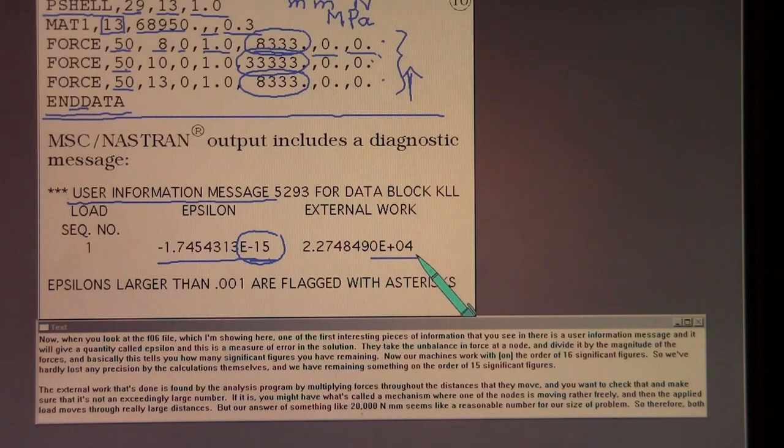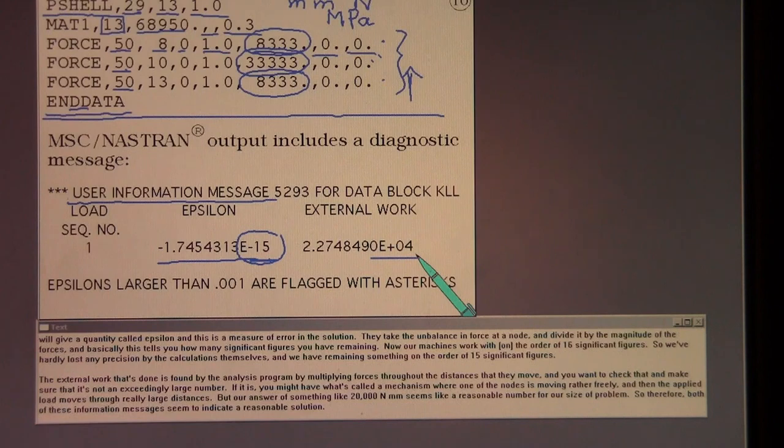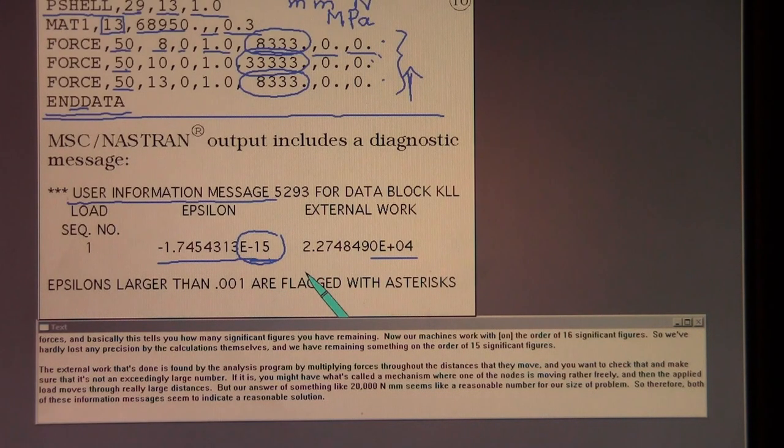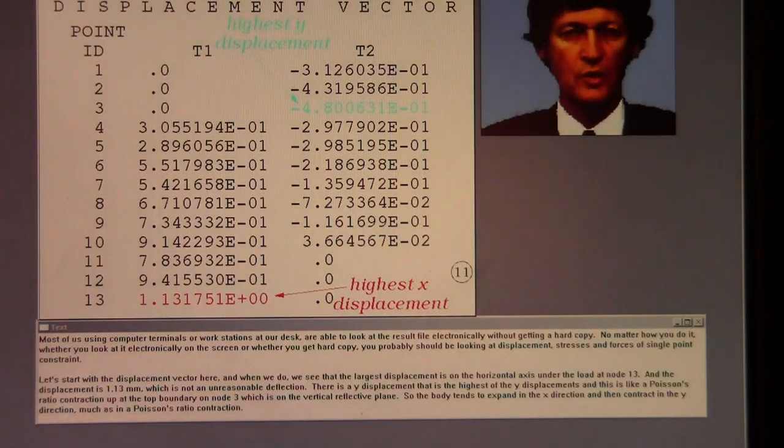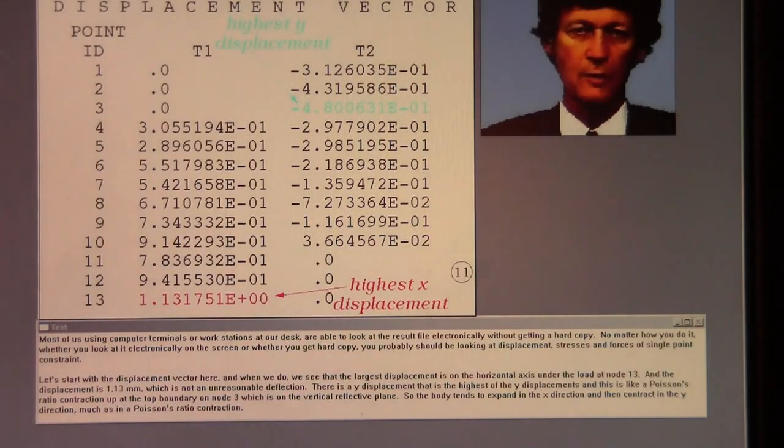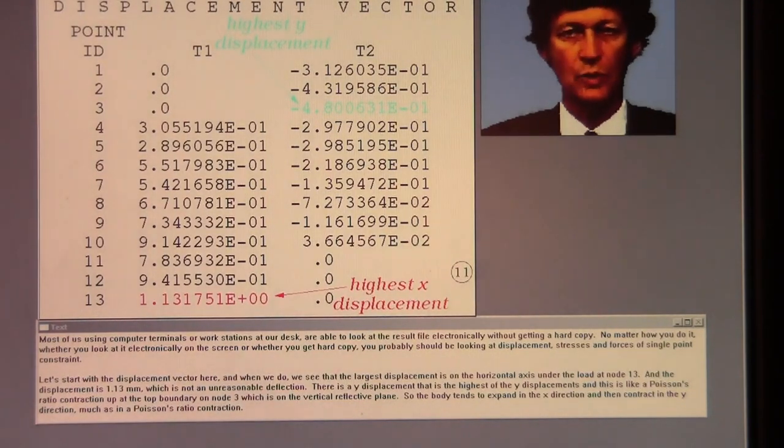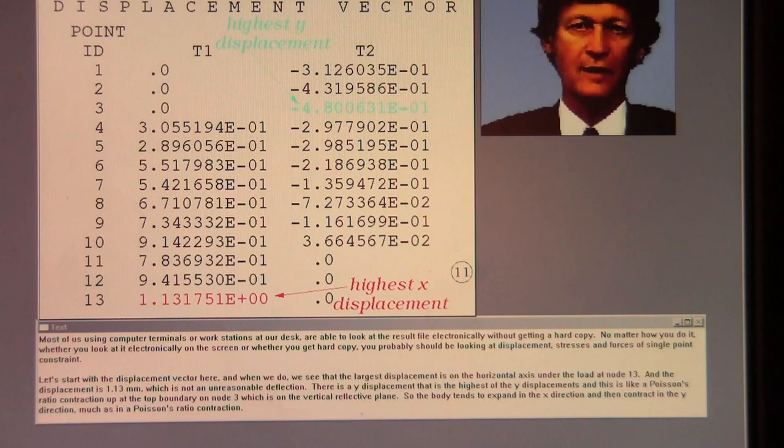The external work that's done is found by the analysis program by multiplying forces through the distances that they move. And you want to check that and make sure that it's not an exceedingly large number. If it is, you might have what's called a mechanism where one of the nodes is moving rather freely and then the applied load moves through really large distances. But our answer of something like 20,000 Newton millimeters seems like a reasonable number for our size of problem. So therefore, both of these information messages seem to indicate a reasonable solution.